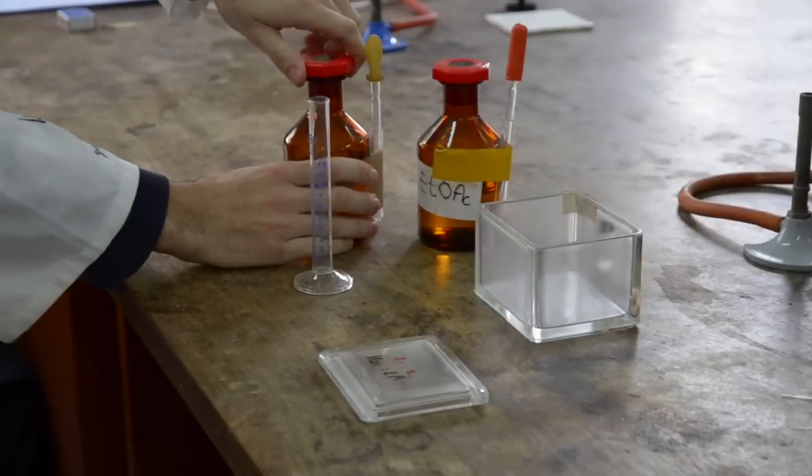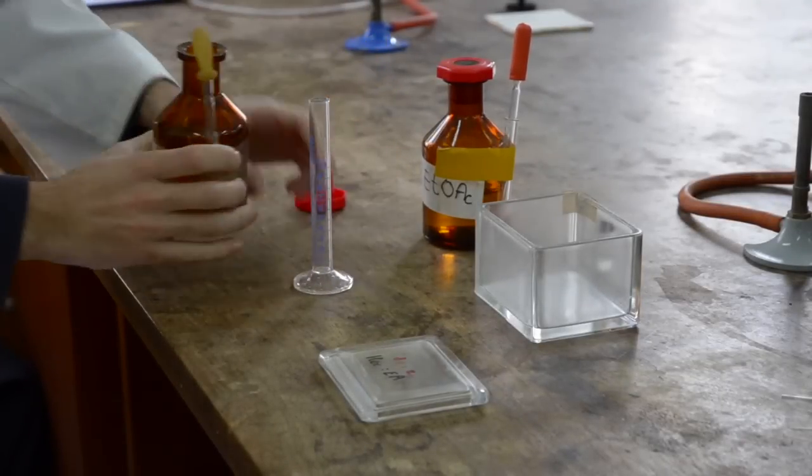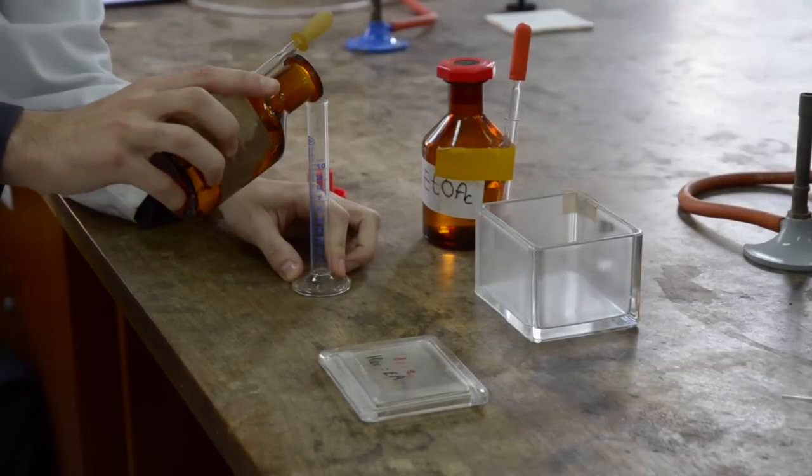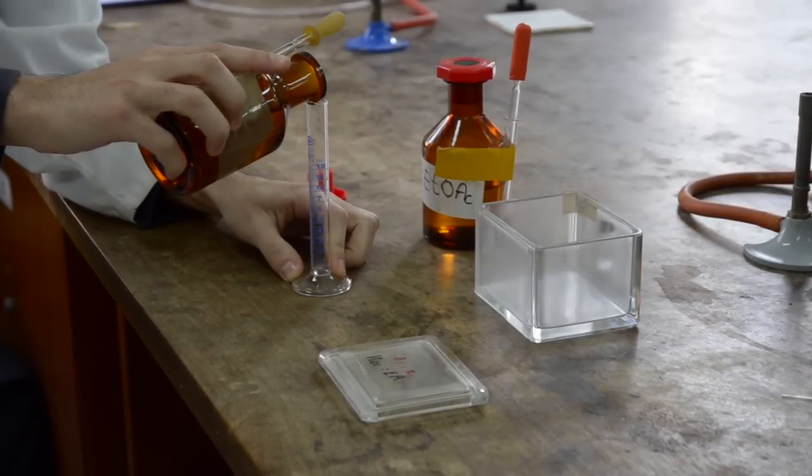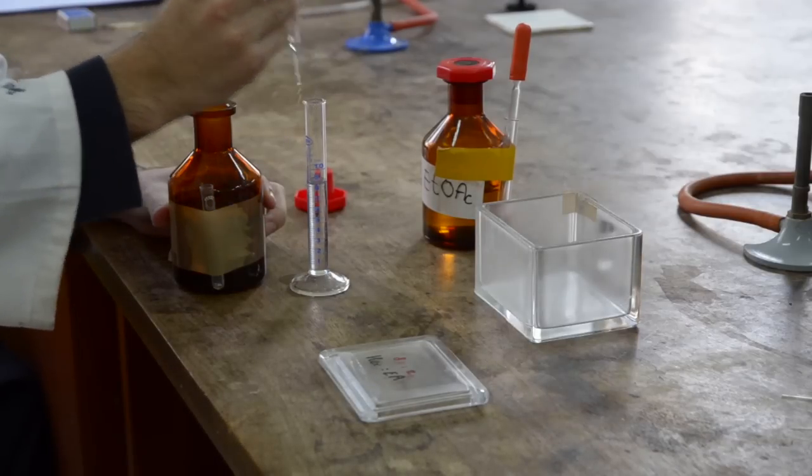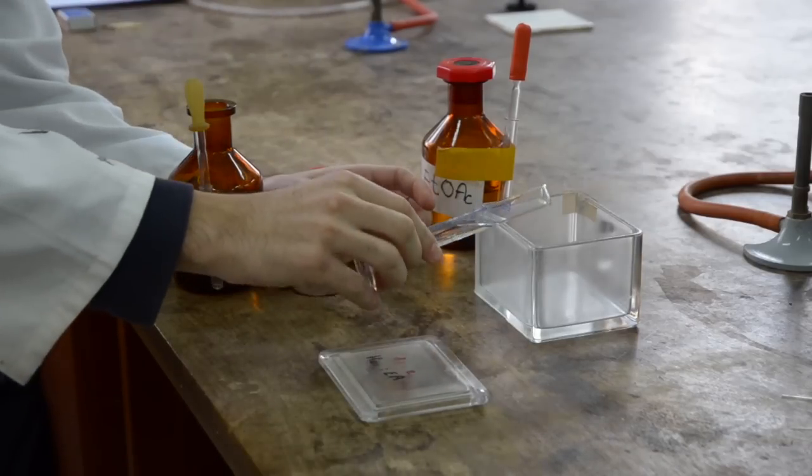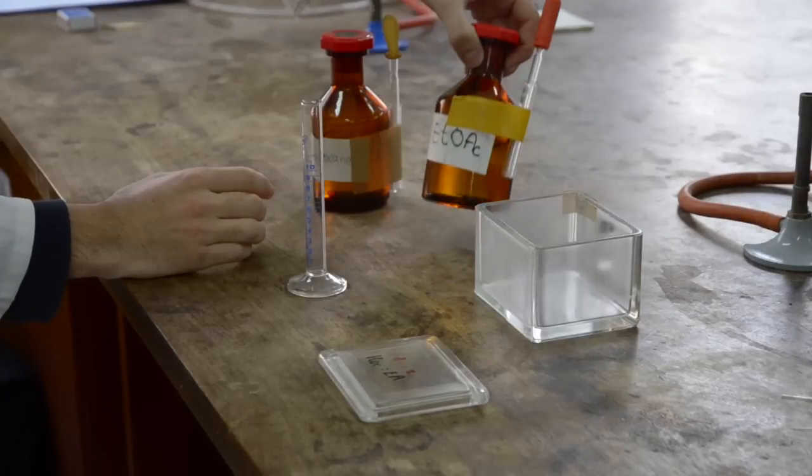Fill your solvent jar with the appropriate eluant mixture. Usually a mixture of hexane and ethyl acetate is used, generally in ratios of 6 to 4, 7 to 3, 8 to 2, or 9 to 1.